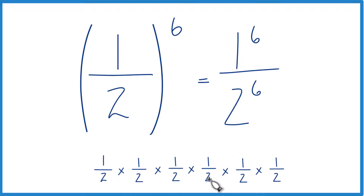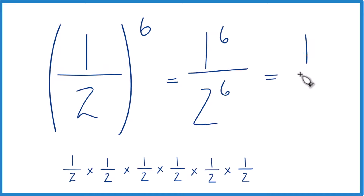And we have one, two, three, four, five, six — two to the sixth. And one to the sixth equals one.